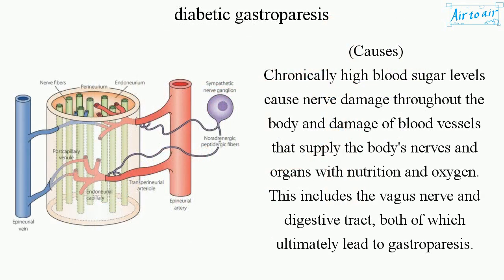Causes: Chronically high blood sugar levels cause nerve damage throughout the body and damage of blood vessels that supply the body's nerves and organs with nutrition and oxygen. This includes the vagus nerve and digestive tract, both of which ultimately lead to gastroparesis.